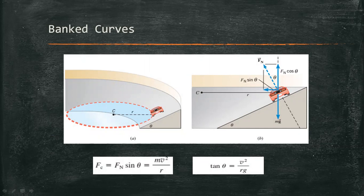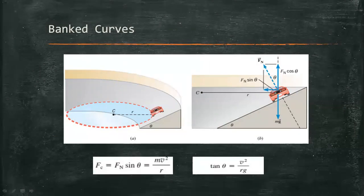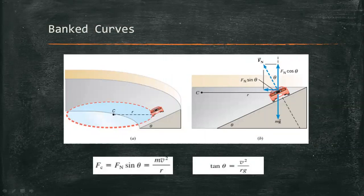The reliance on friction can be eliminated completely for a given speed, however, if the curve is banked at an angle theta relative to the horizontal, much in the same way that a plane is banked while making a turn.